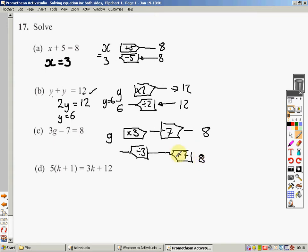The inverse of take 7 is to add 7. And the inverse of times 3 is to divide by 3. And that will give my answer. So 8 add the 7 is 15. 15 divided by the 3 is 5. So I think g equals 5. I'm going to write that down now. If g was 5, 5 times 3 is 15. Take the 7 is 8. I've got that correct.